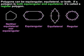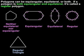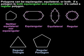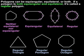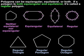Some other regular polygons are shown below: a regular triangle, a regular pentagon, and a regular octagon. So remember, a regular polygon is both equiangular and equilateral.